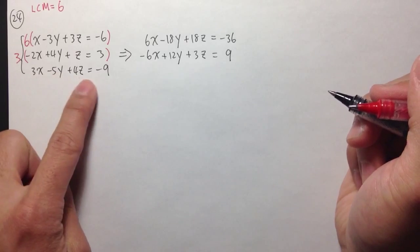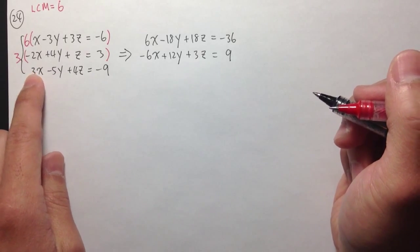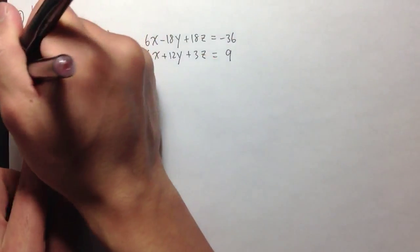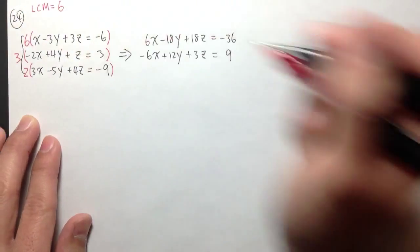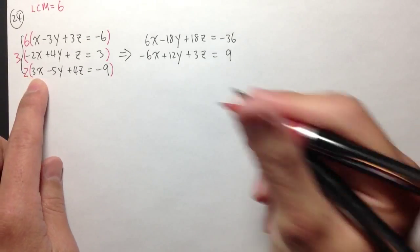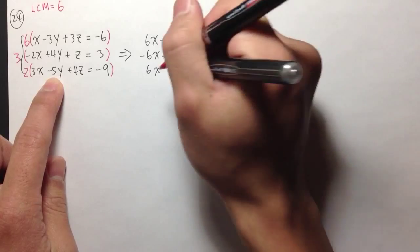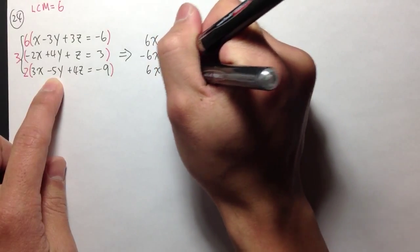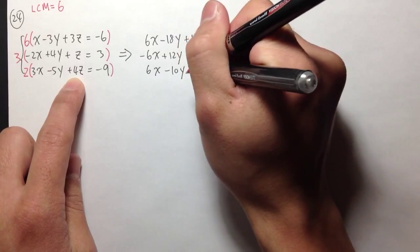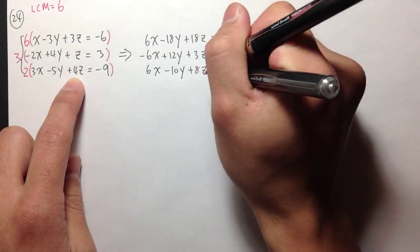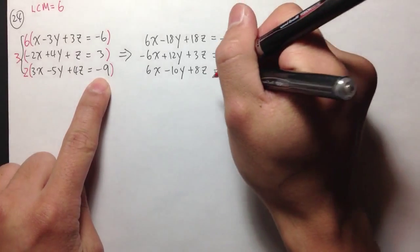For the third equation, I have 3x already. I need to make this a 6, so I multiply by 2 throughout. 2 times 3x is 6x, 2 times negative 5y is minus 10y, 2 times 4z is plus 8z, and 2 times negative 9 is negative 18.